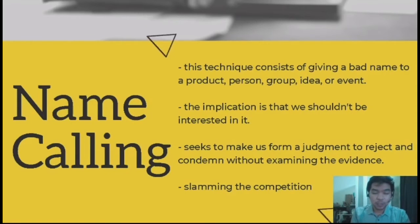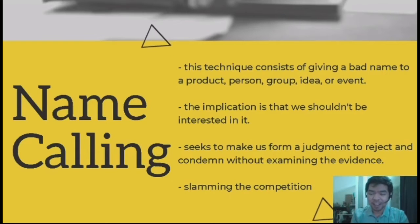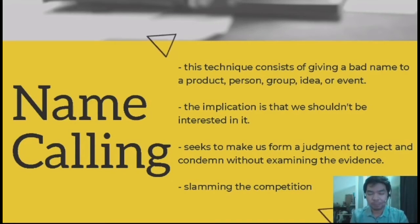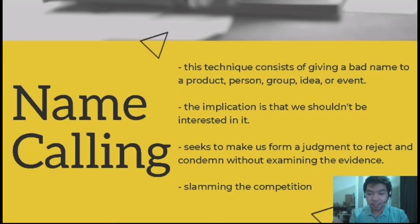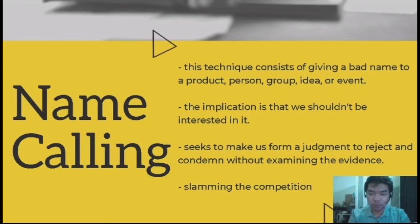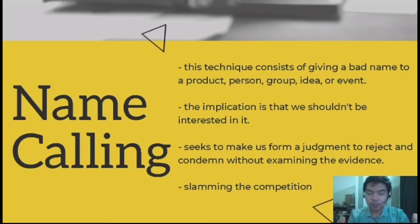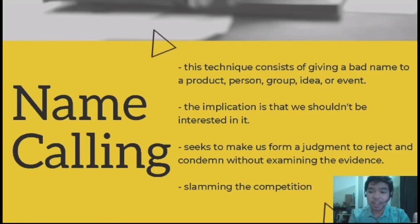Name calling seeks to make us form a judgment to reject and condemn without examining the evidence, and it is basically slamming the competition. When you say name calling, it's like making a name to derogate that person's or product's value. What you do when you use name calling is you put down the other product. For example, with student A and student B — if you want student A to look good to teachers, what student A did is name call or put down student B, their competition.